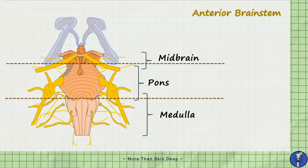These three regions are important in regulating things like breathing and heart rate, but also house cranial nerve nuclei which give rise to cranial nerves. These cranial nerves come off at different points across the brainstem, where they leave the cranial cavity to supply and innervate important structures.